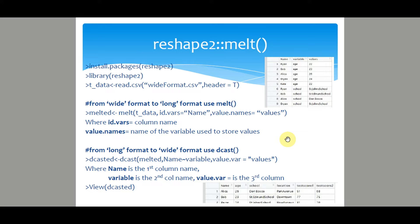Now to convert from long format to wide format, using another reshape2 function called dcast, where name is the first column name, variable is the second column name, and value dot var is the third column name. View the data, you'll see the table is back to the original format.